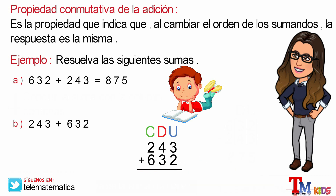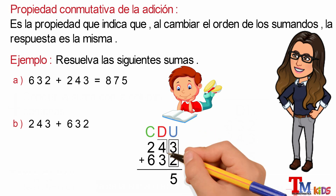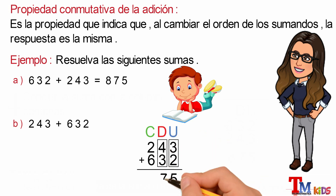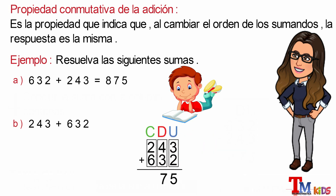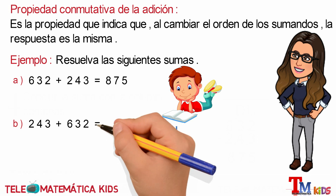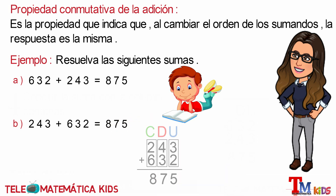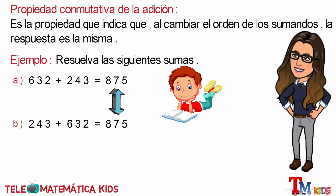Comenzaremos la suma de la columna de las unidades. Tres más dos son cinco. Y este resultado lo escribimos en la operación de 243 más 632. Podemos observar que ambos resultados son exactamente iguales, por lo que podemos concluir que los sumandos pueden cambiar de lugar indistintamente, y el resultado no va a variar.